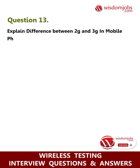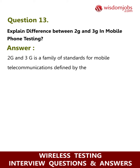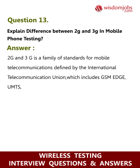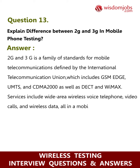Question 13: Explain the difference between 2G and 3G in mobile phone testing. Answer: 2G and 3G are a family of standards for mobile telecommunications defined by the International Telecommunication Union, which includes GSM, EDGE, UMTS, and CDMA 2000, as well as DECT. Services include wide area wireless voice telephone, video calls, and wireless data, all in a mobile environment.